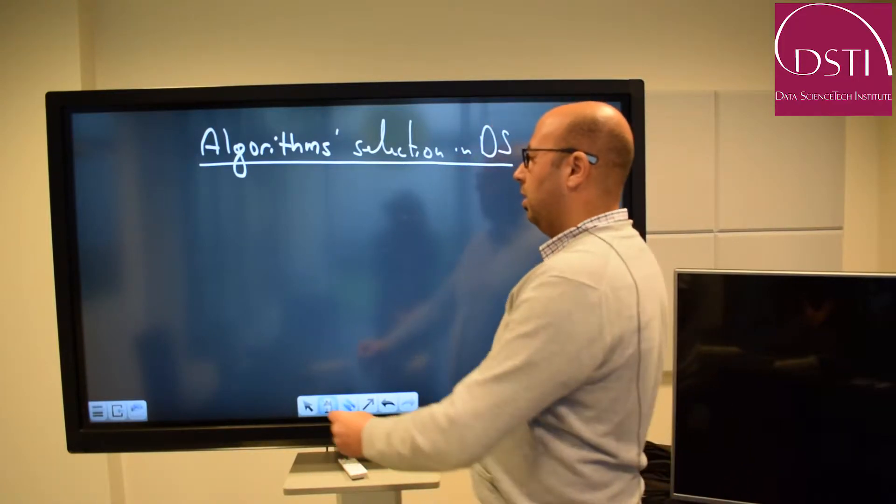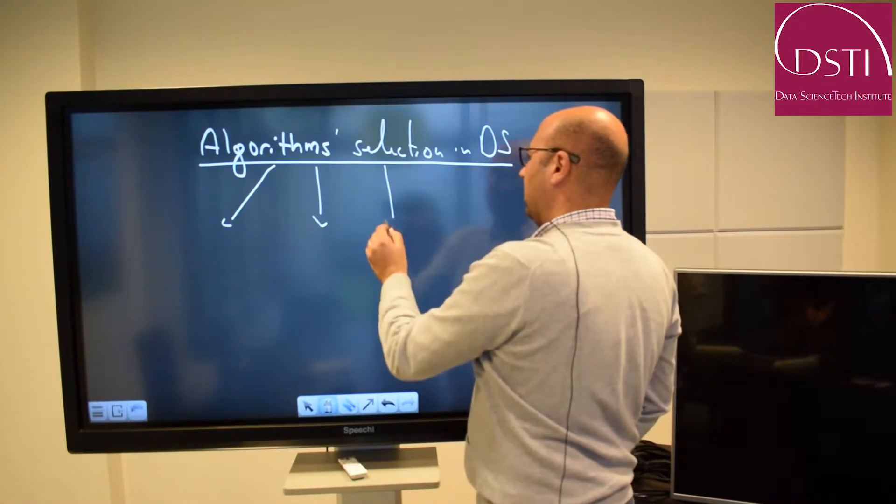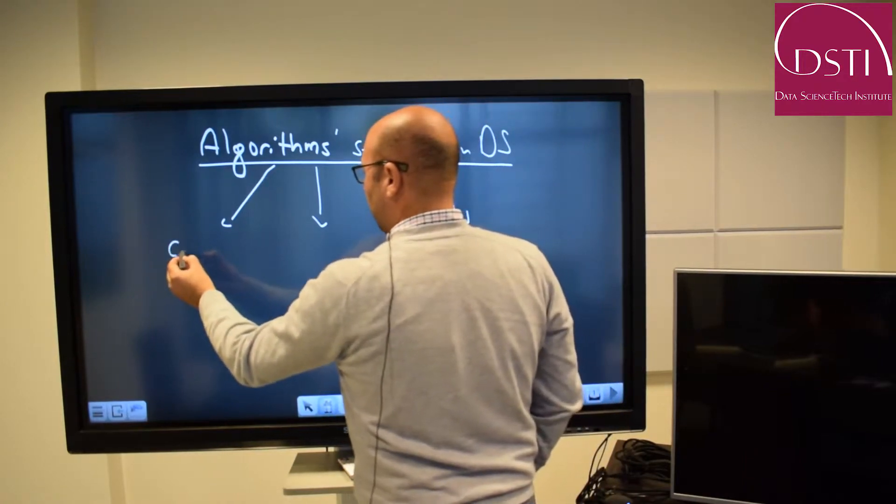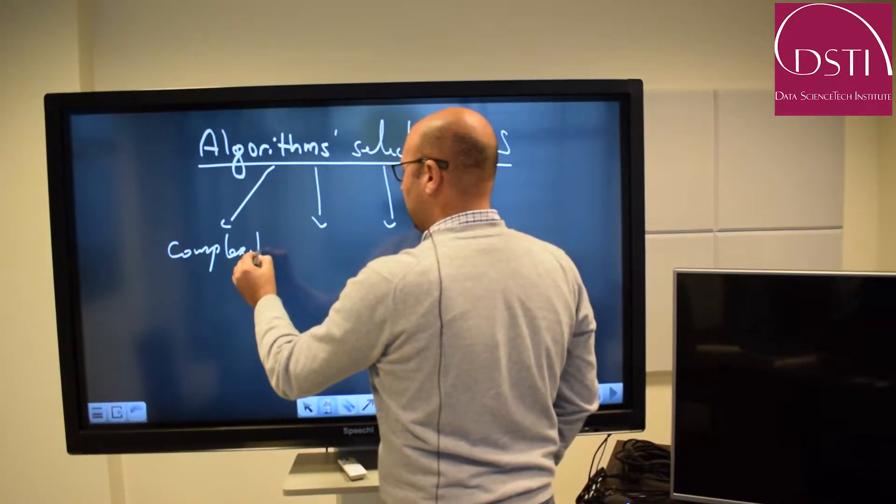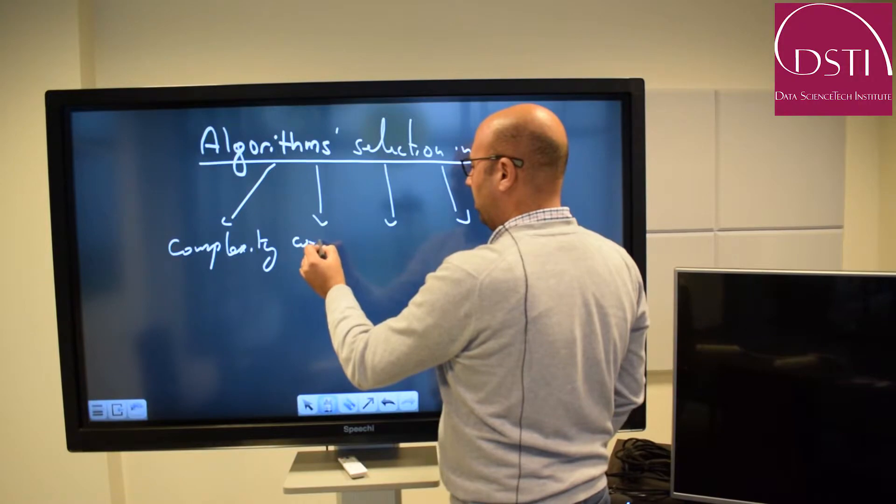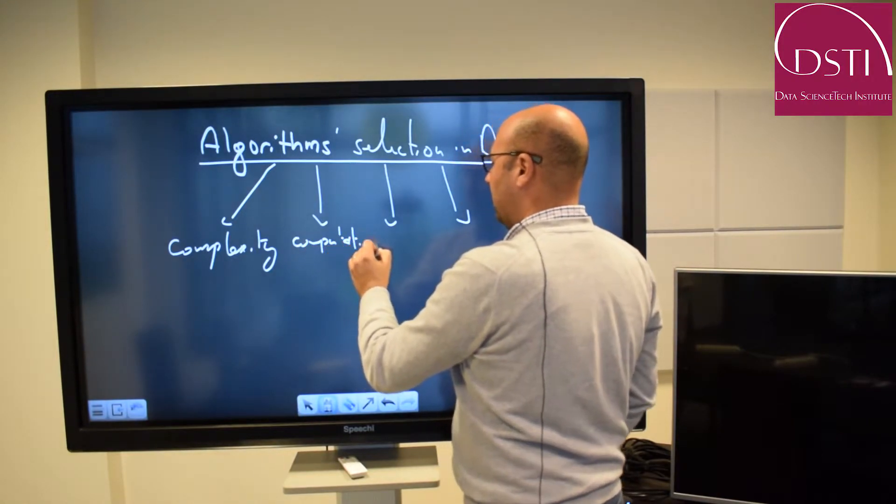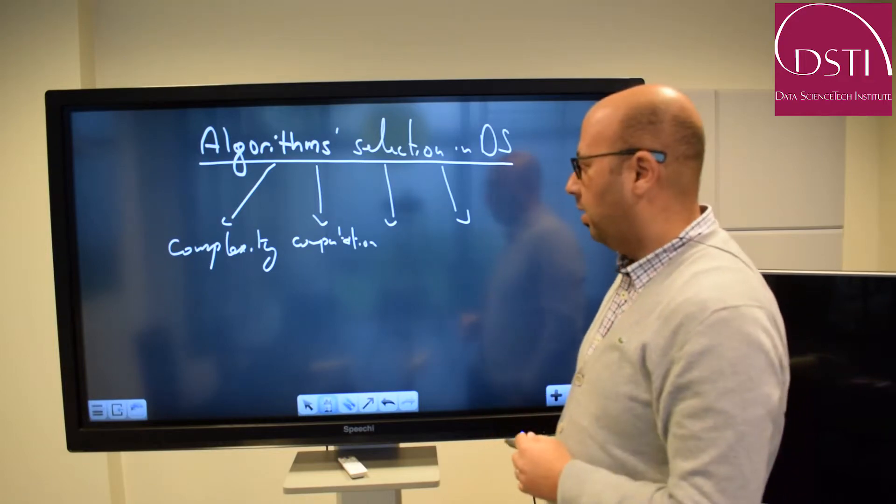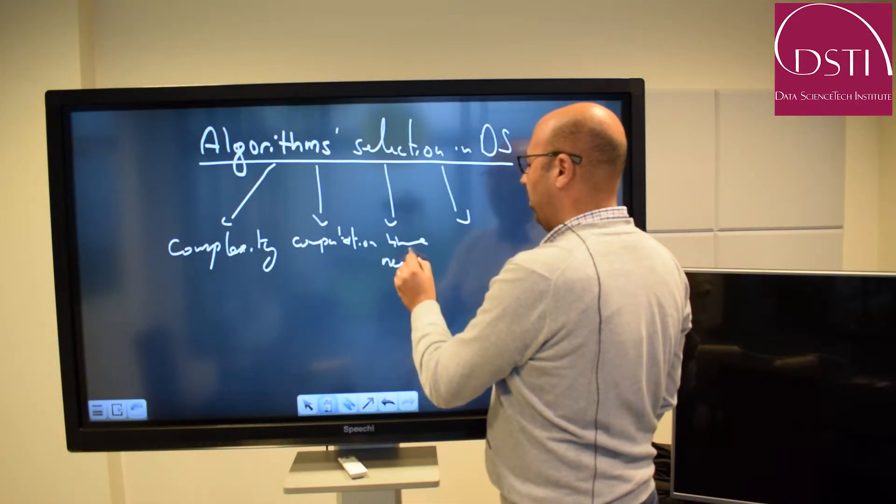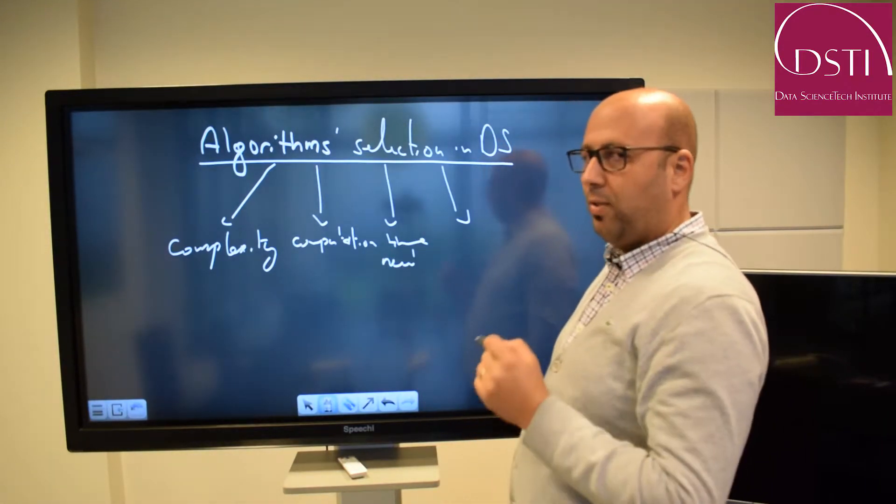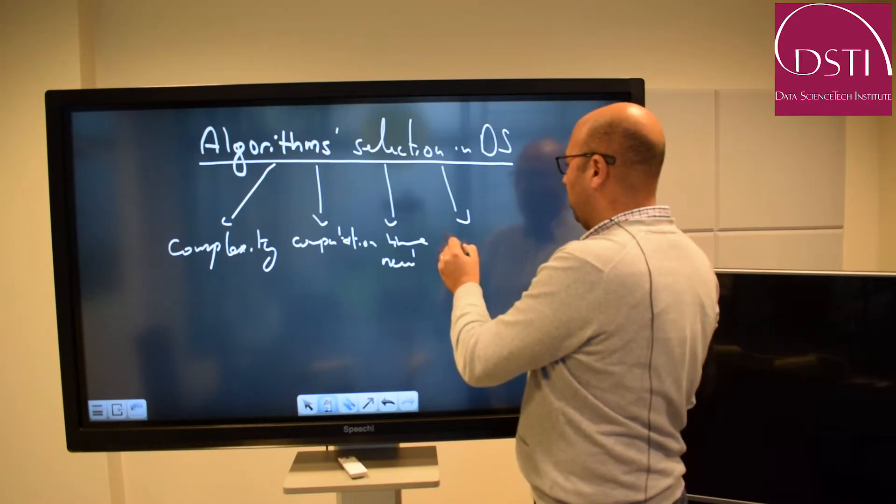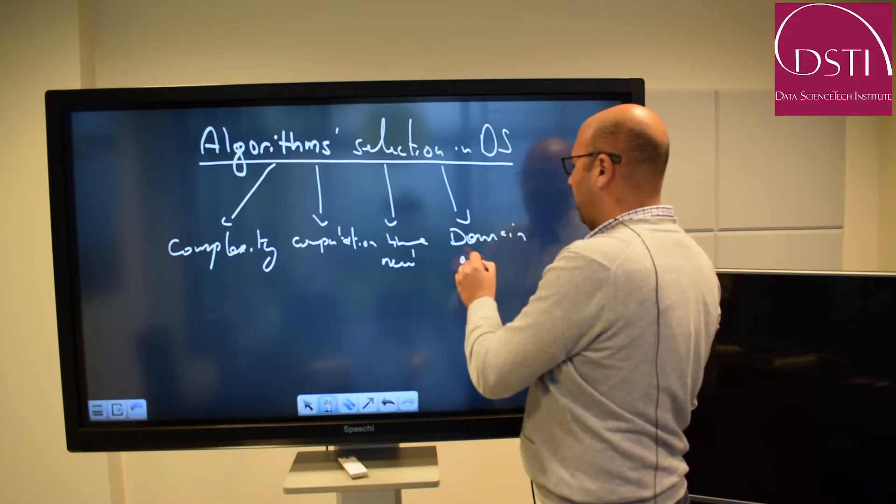Many criteria can be used in order to select your algorithm. The first thing is to consider the complexity of this algorithm. You need also to see in terms of computation, what is the computation power that you have. The second thing is the time needed, of course, to have one solution. And finally, what is the domain of application.